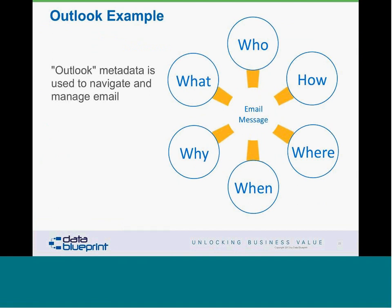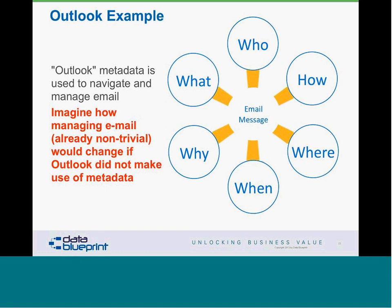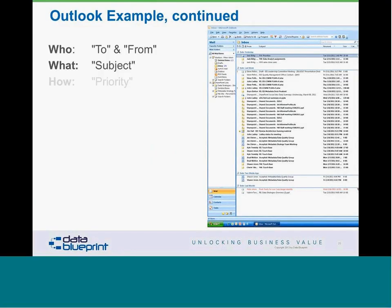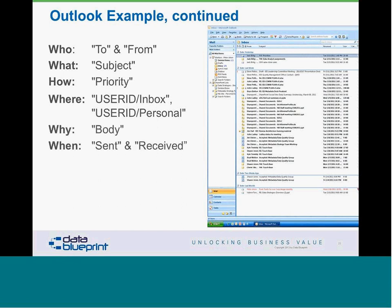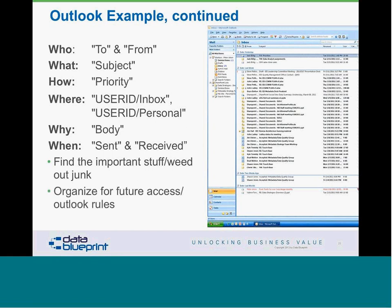Outlook also uses metadata to help us navigate and manage our overflowing inboxes. If we drop an email message at the center, think how difficult it would be to search your email without surrounding metadata. In an Outlook example: to and from tell us who, the subject tells us what, priority tells us how, inbox or personal folder tells us where, and the body and sent/received timestamps complete the picture. Those with overflowing email boxes use this metadata to find important items, weed out less important ones, and organize for future access.